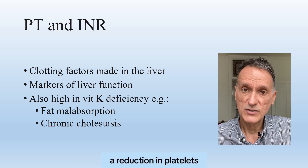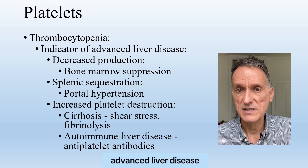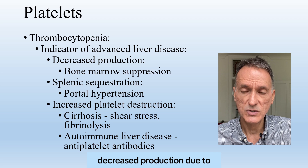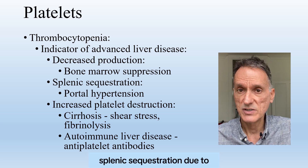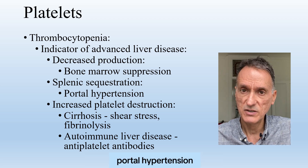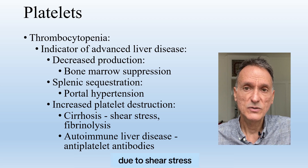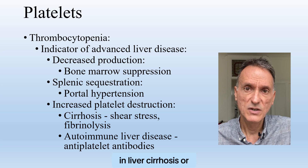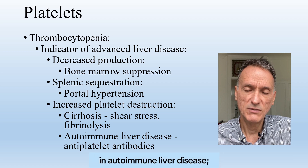A reduction in platelets, or thrombocytopenia, is an indicator of advanced liver disease. A low platelet count is caused by decreased production due to bone marrow suppression, splenic sequestration due to portal hypertension, and increased platelet destruction due to shear stress and fibrinolysis in liver cirrhosis, or due to antiplatelet antibodies in autoimmune disease.